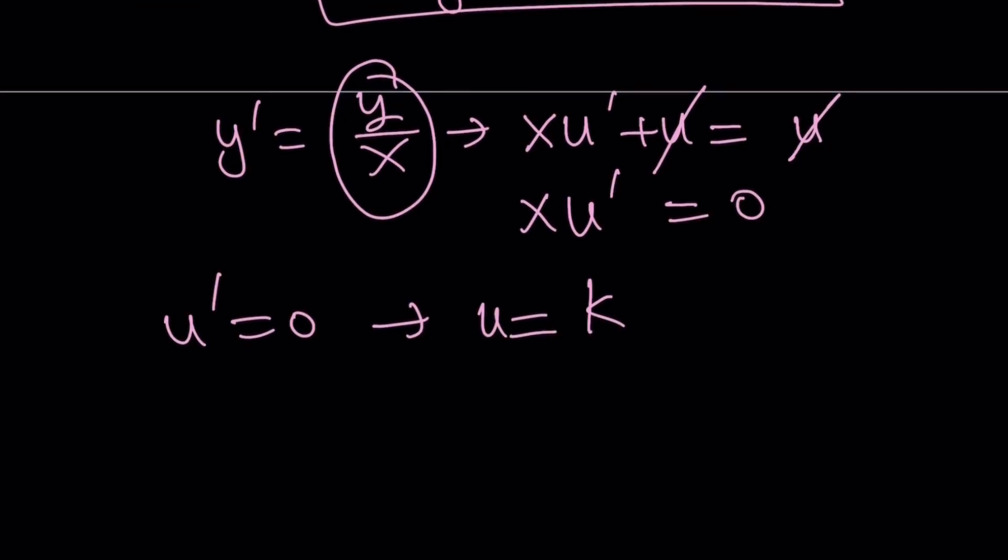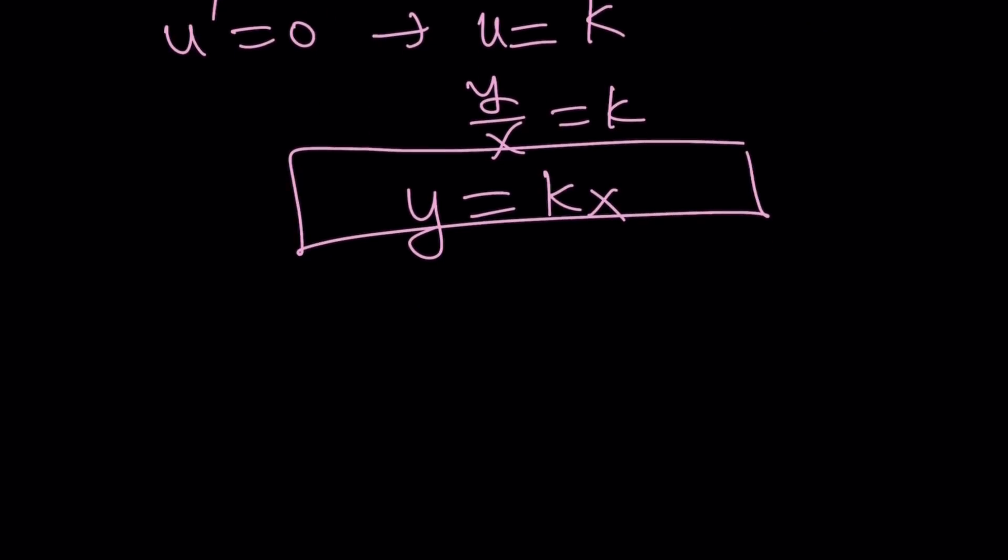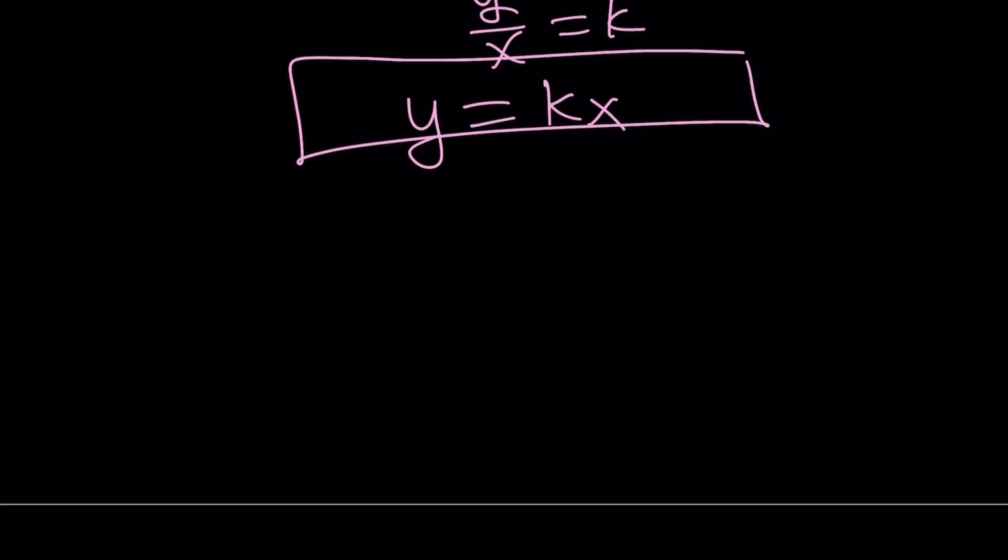But u is equal to y over x. So y over x is equal to k. And this gives us y equals kx. Now that gives us the homogeneous solution. And then if you put it together with the first method to find the particular solution, then you will obtain y equals x squared plus kx as before.